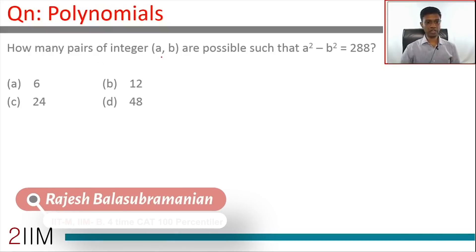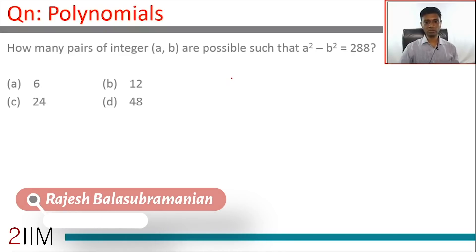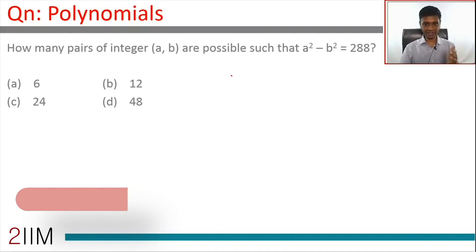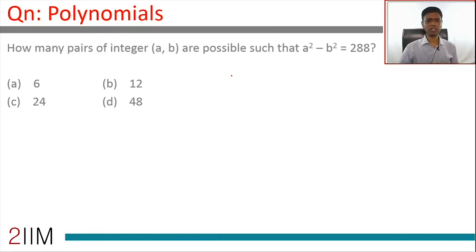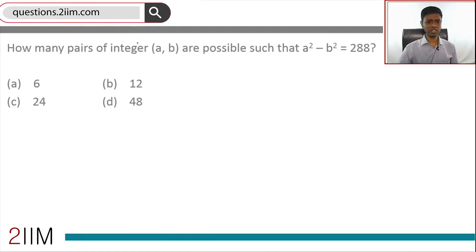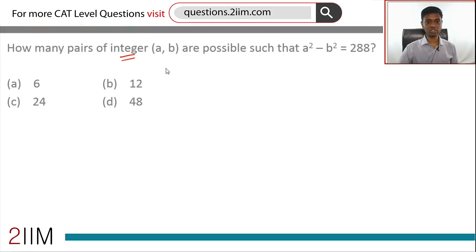How many pairs of integers a and b are possible such that a² minus b² is 288? It's an absolutely fabulous question, mainly because if you get the idea right and then build on it, you have to be very careful about details. The first thing to note is: pairs of integers, not natural numbers, so we'll have to worry about positive and negative.